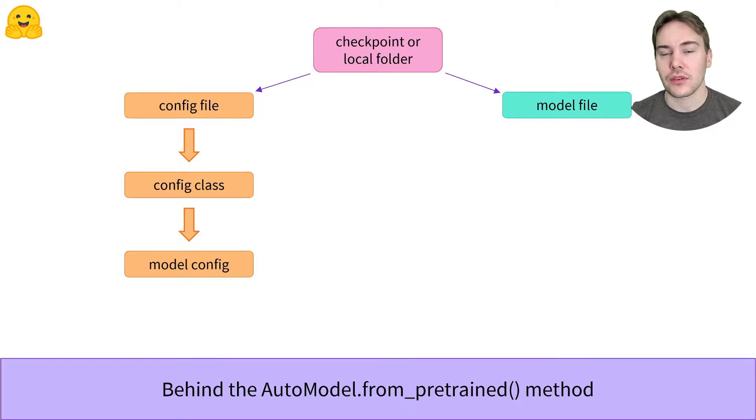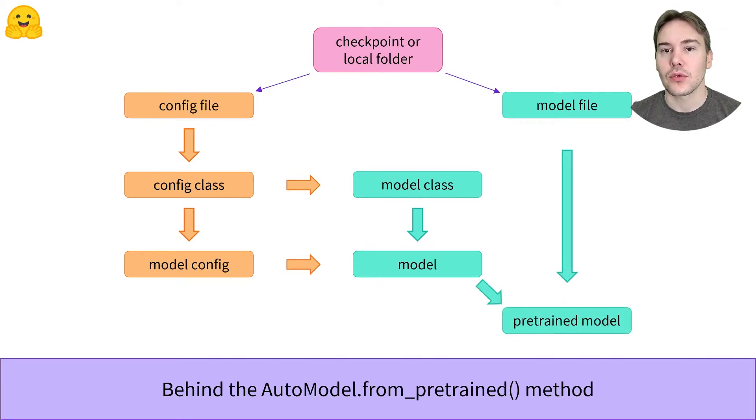It also uses this configuration class to find the proper model class, which is combined with the loaded configuration to load the model. This model is not yet a pre-trained model, as it has just been initialized with random weights. The last step is to load the weights from the model file inside this model.